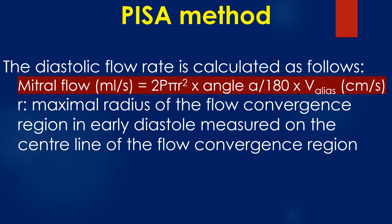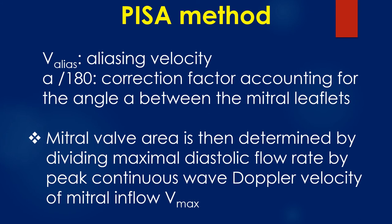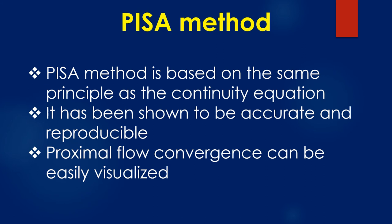R is the maximal radius of the flow convergence region in early diastole, measured on the central line of the flow convergence region. The aliasing velocity and alpha/180 correction factor account for the angle alpha between the mitral leaflets. Mitral valve area is then determined by dividing the maximal diastolic flow rate by the peak continuous wave Doppler velocity of mitral inflow (Vmax). The PISA method is based on the same principle as the continuity equation and has been shown to be accurate and reproducible. Proximal flow convergence can be easily visualized.